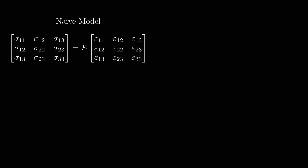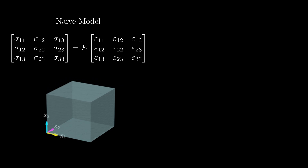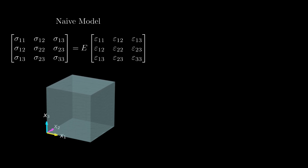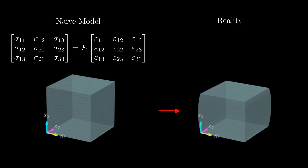But there is a catch — this model is a bit too idealized to describe the mechanical behavior of matter. This becomes clear when we implement this naive model in a simulation of the compression of a solid cube. At first glance the results look quite realistic, but when we take a closer look we observe something odd. When we compress an object in one direction we typically expect the object to expand in the other directions. This is called the Poisson effect.